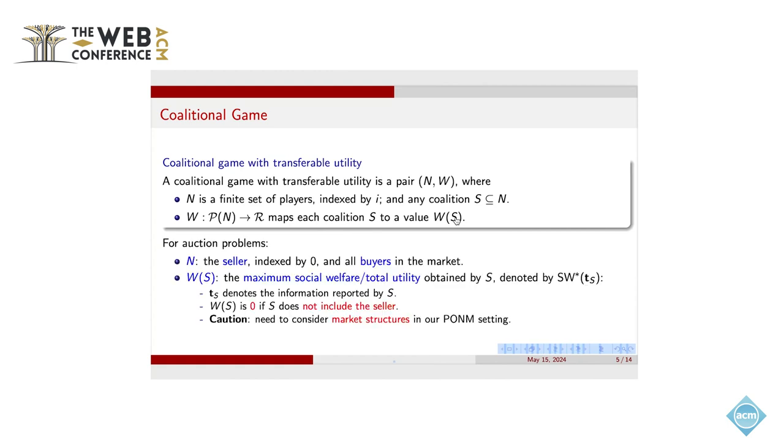And in auction problems, we need to note that this set N includes not only the bidder but also the seller. And the W here is defined as the maximum social welfare of this auction market. This is just the total utility obtained by this subgroup S. Basically, we only consider the grand coalition. That means the whole market.